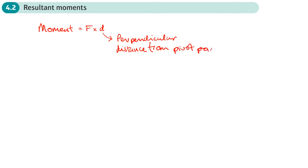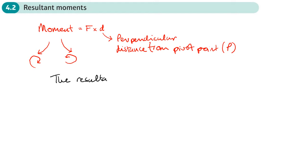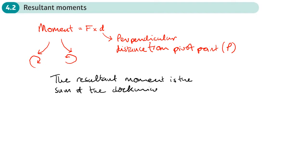Normally in diagrams the pivot is labeled as point P. We also saw that a moment can act in one of two directions: a clockwise direction or an anti-clockwise direction. We can find the resultant moment by adding those together — the resultant moment is the sum of the clockwise and anti-clockwise moments.